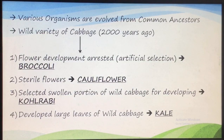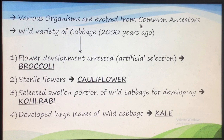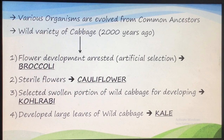Various organisms are evolved from common ancestors. Another example shows that various dissimilar-looking structures they evolved from a common ancestor. The example is the cabbage — the wild variety of cabbage that farmers were cultivating around 2,000 years ago.